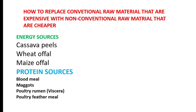When it comes to replacing conventional raw materials with non-conventional ones, we have cassava peels as an energy source, wheat offal, and maize offal. For protein sources we have blood meal, maggot, poultry viscera, and poultry feather meal. These are the energy and protein sources we can use to replace expensive conventional feed ingredients as a result of the current economic crisis.